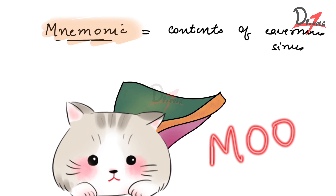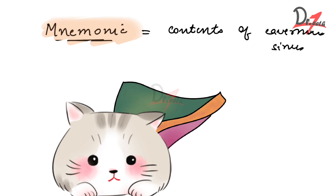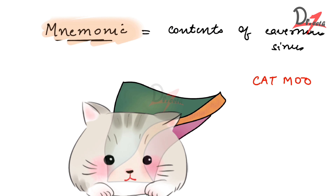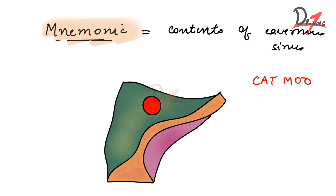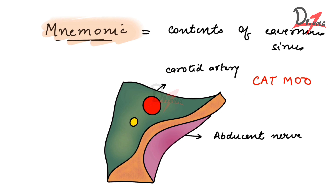So the mnemonic is CAT MOO. The first letter C stands for Carotid artery, A stands for Abducent nerve, and T stands for Trochlear nerve.